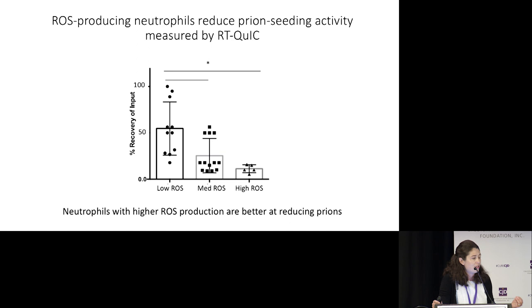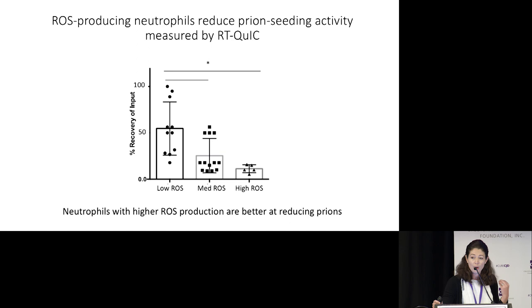I also wanted to look at how many prions are actually left in the dish when I change the cells' ability to produce these ROS disinfectants. What I found is that it's the neutrophils with the higher ROS production that are really better at reducing the prion amount — with medium and high ROS, there are fewer prions left in the dish.